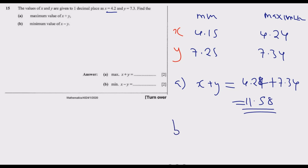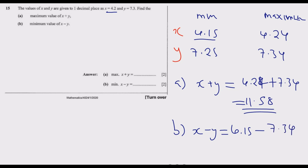For part b), the minimum value of x minus y occurs when x is at its lowest and y is at its highest — giving the most negative result. So we take 4.15 minus 7.34, which equals negative 3.19. Therefore, the minimum value of x minus y is negative 3.19.